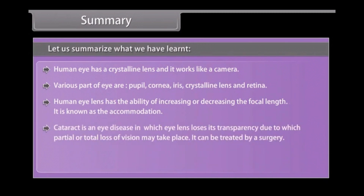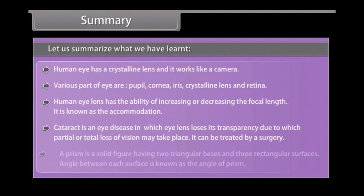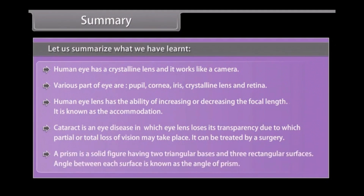Cataract is an eye disease in which the eye lens loses its transparency, leading to partial or total loss of vision — it can be treated by surgery. A prism is a solid figure having two triangular bases and three rectangular surfaces, and the angle between each surface is known as the angle of prism.